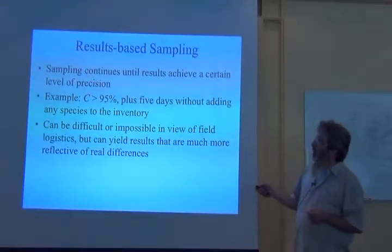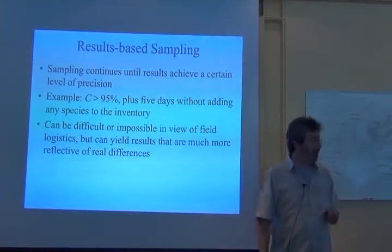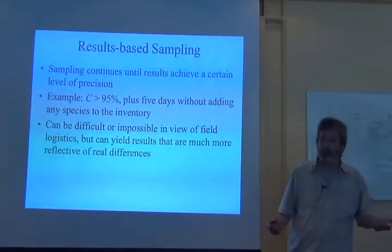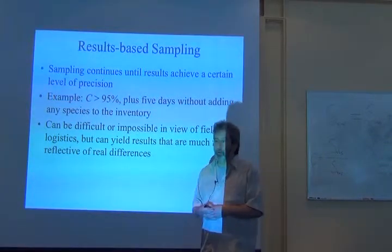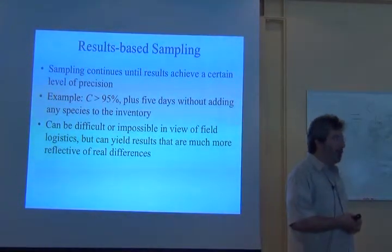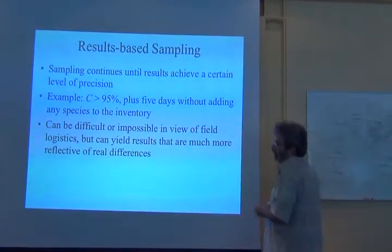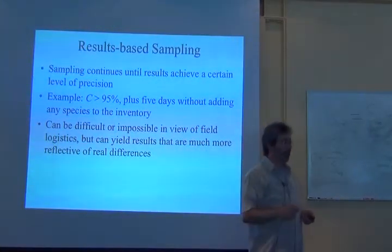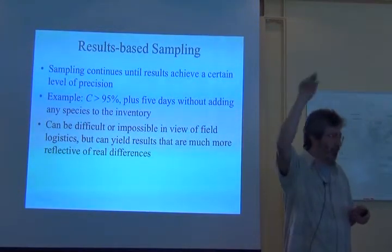We might ask for C above 95% — we might want to have some statistical confidence that we have detected 95 out of every hundred species. We might also want to look for some stability in the results as well, just to protect against those jumps that you sometimes see.